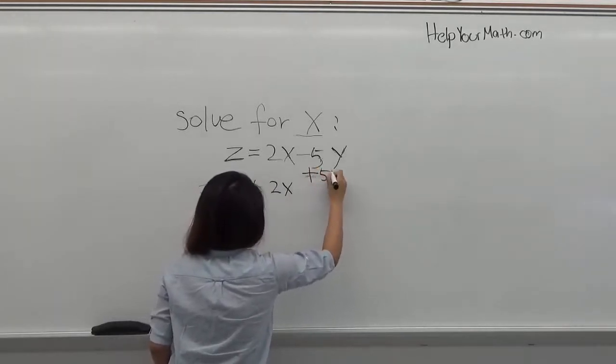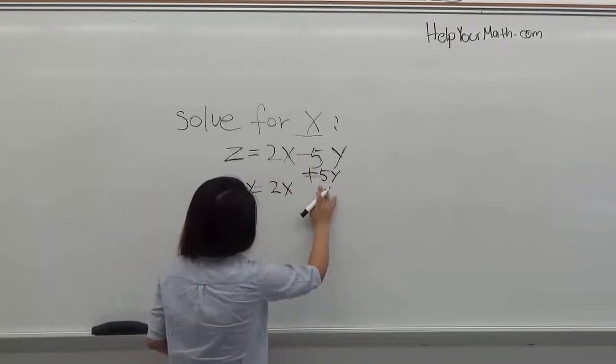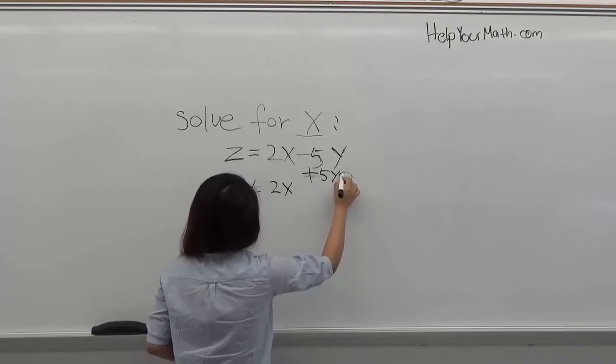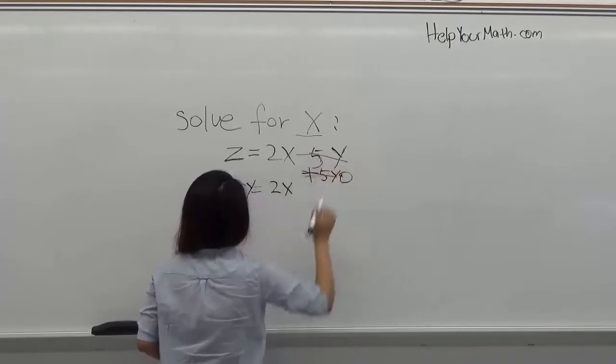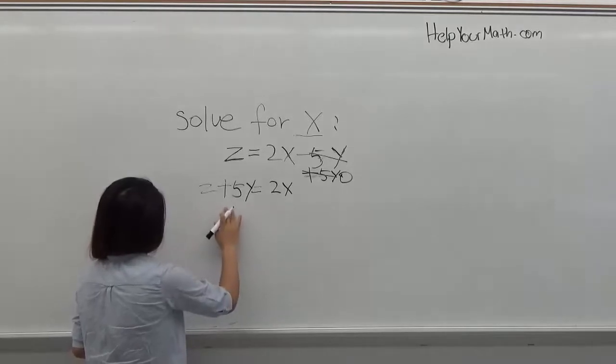Add 5y here. Negative 5y and positive 5y are going to be 0. So you get 2x equals z plus 5y.